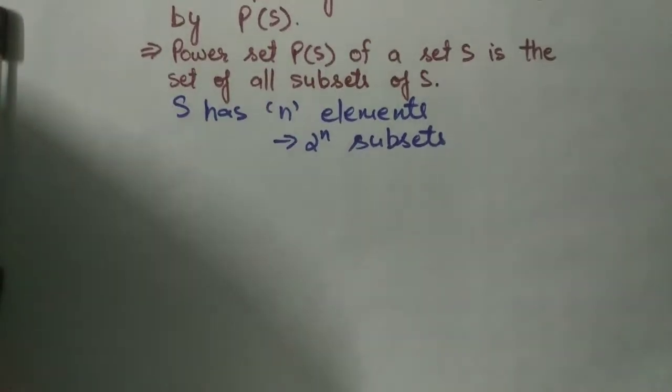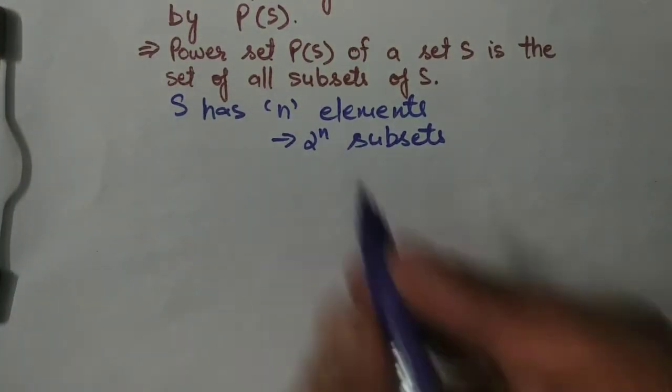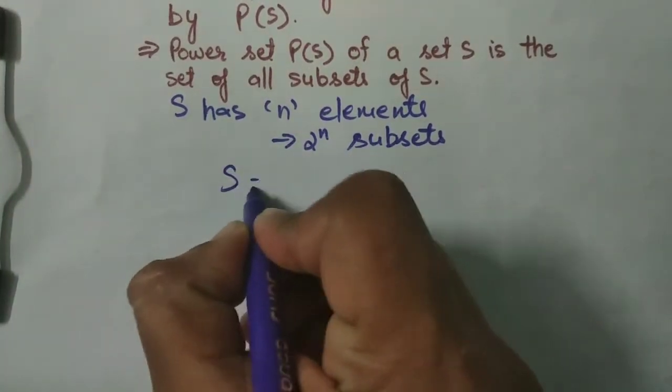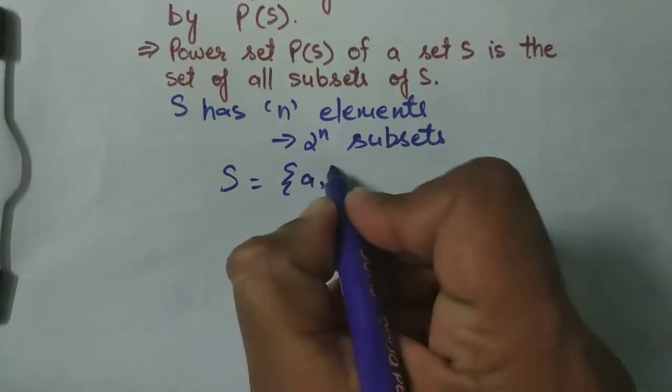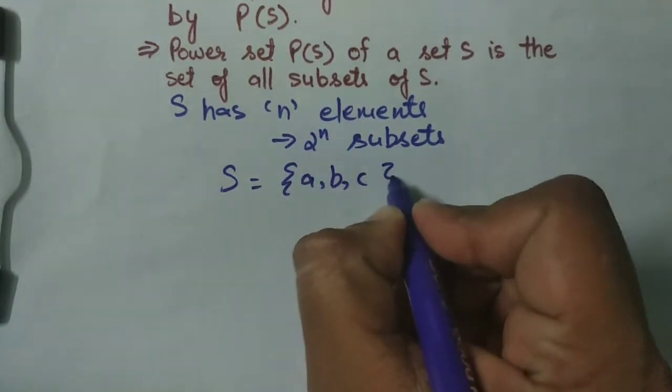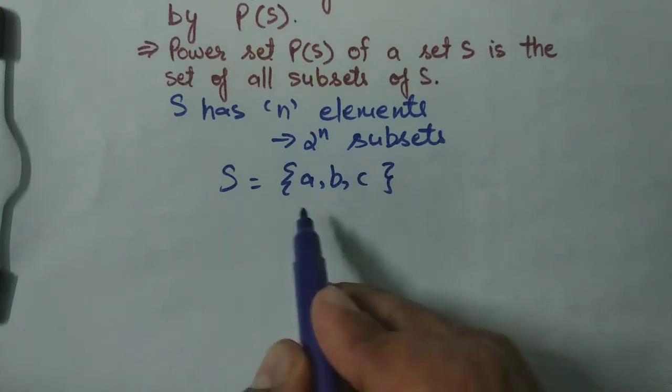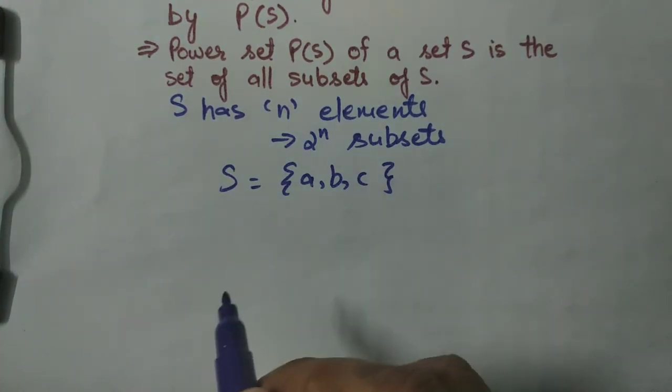It will be more clear after this example. Suppose there is a set S and it has 3 elements. Then definitely this set S will have 8 subsets.